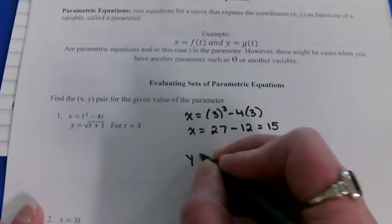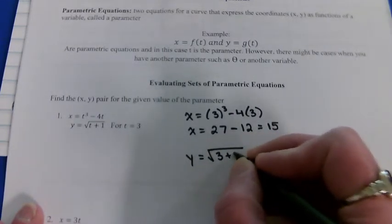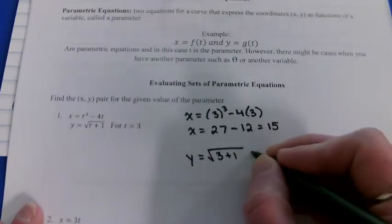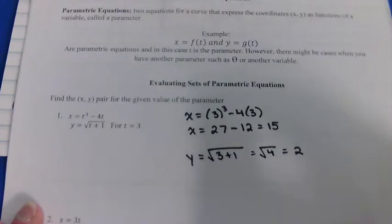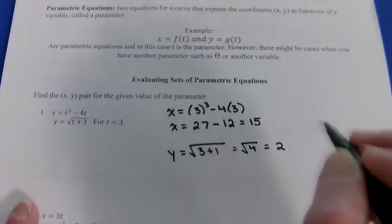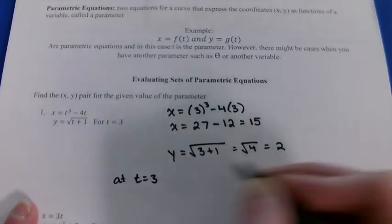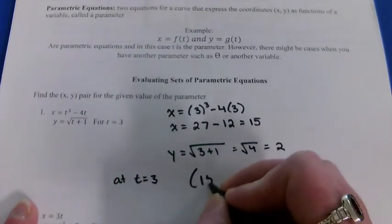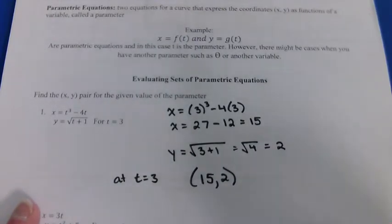And then to find the y coordinate at time 3, we plug 3 in for time there, get the square root of 4, which is 2. So we would know that at that given moment, at t equals 3, we're at the point (15, 2). Now a minute or a second later, that ant could be totally somewhere else.